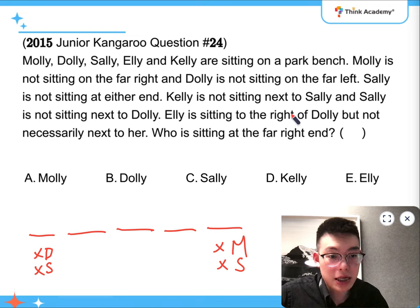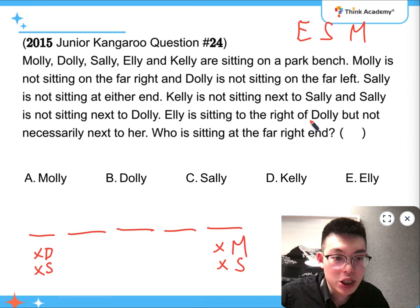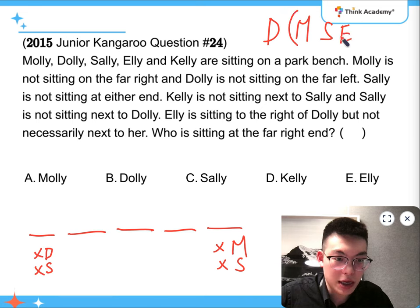So it means that Sally is not sitting next to Kelly or Dolly or at the end, which means that Sally has to be sitting between Ellie and Molly in any direction. And then, Ellie is sitting to the right of Dolly, but not necessarily next to her. So it means that the Sally, Molly, Ellie bundle is going to be taking three consecutive spots no matter how.